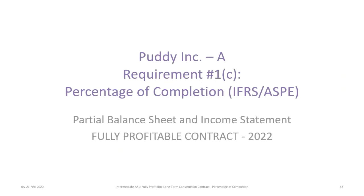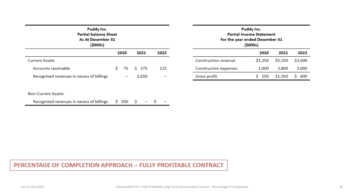Our final requirement is to present the partial balance sheet and income statement for 2022. On the balance sheet, only an Accounts Receivable balance of $125,000 remains — nothing for Recognized Revenues in Excess of Billings, since the contract has been fully billed and both Construction in Progress and Billings accounts are cleared. The 2022 income statement shows construction revenue of $3.6 million, costs of $3 million, and gross profit of $600,000. The contract is complete.